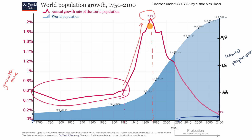Why did the rate of growth increase so much? The main argument is that as we became a more industrial society, healthcare would have improved, so child mortality would have gone down and people would have died of fewer diseases. At the same time, we would have gotten more efficient with agriculture — modern farming methods — so food would get cheaper, more abundant, and more people would have access to nutrition. All of those would drive the growth rate up.